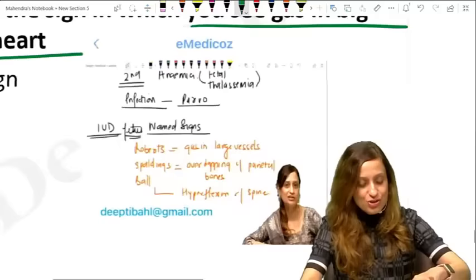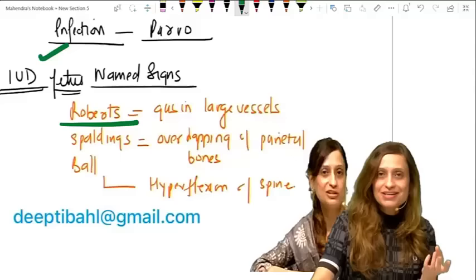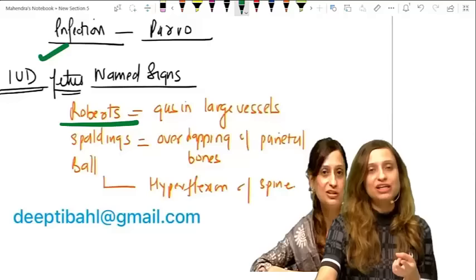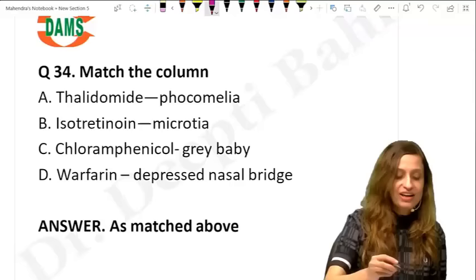Name the sign in which you see gas in big vessels and the heart — this is the Robert sign, a sign of intrauterine fetal death. Spalding's sign is overlapping of parietal bones; Ball sign is hyperflexion of the spine. These are all signs of intrauterine death.